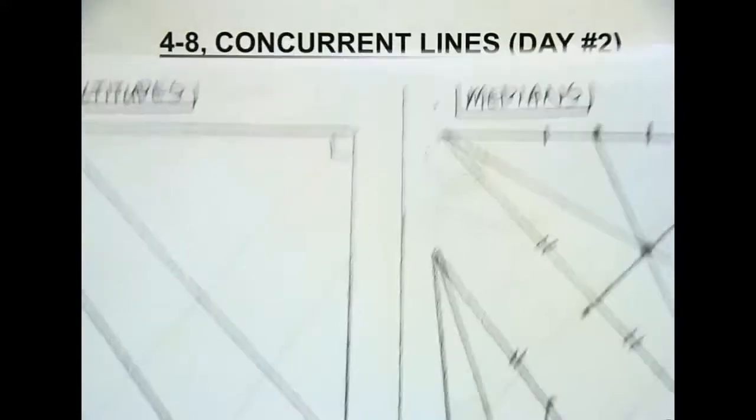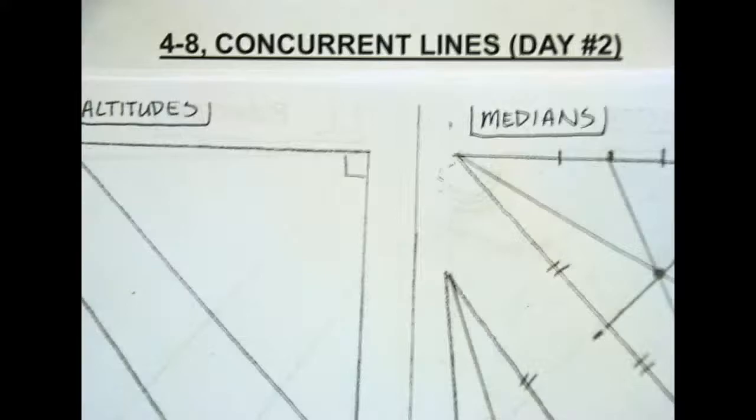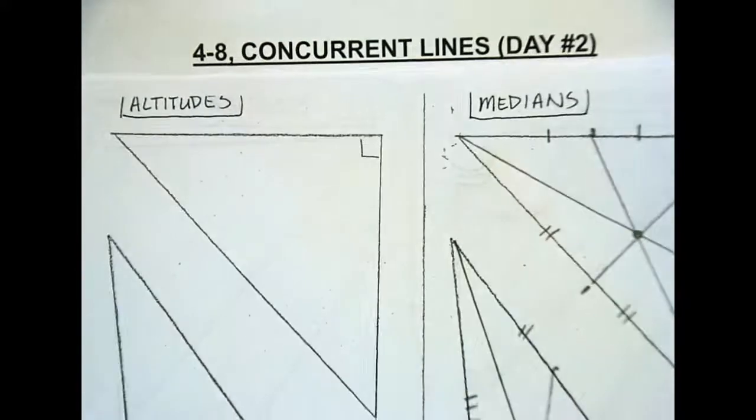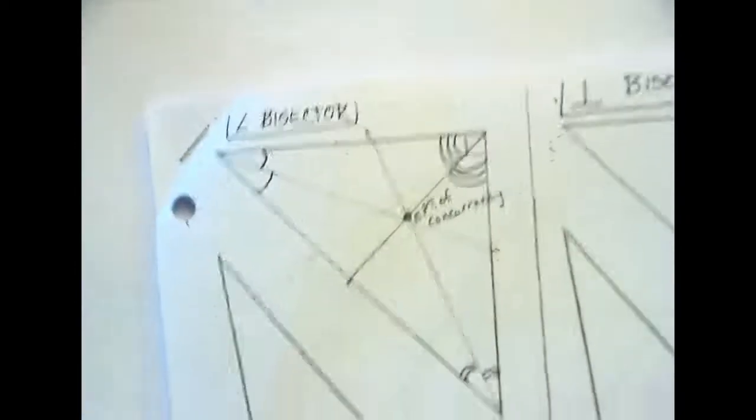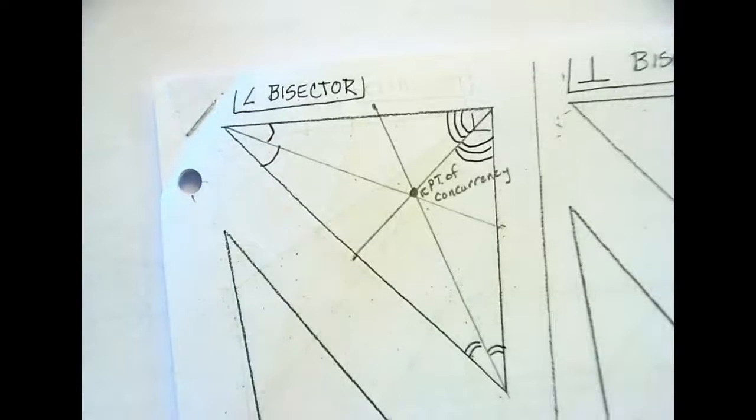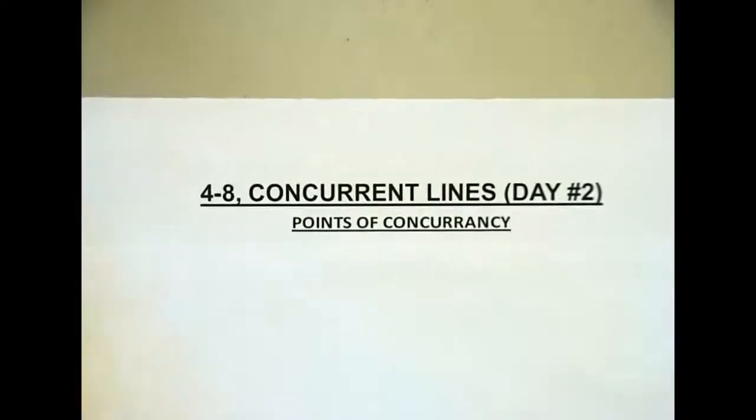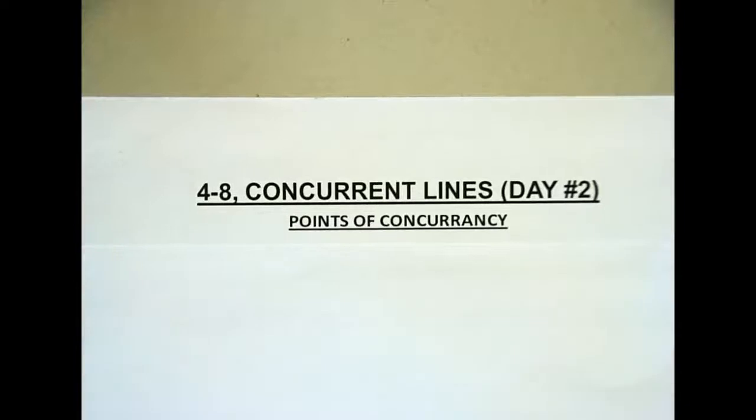So you'll need all your stuff out from yesterday. What will really be helpful is this page, our notes page, but we're doing concurrent lines day two. Yesterday we covered all concurrent lines when we dealt with angle bisectors. We found the point of concurrency for acute, obtuse, and right triangles. We did that for perpendicular bisectors, and we did that for our medians.